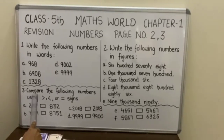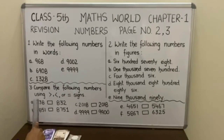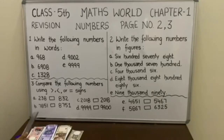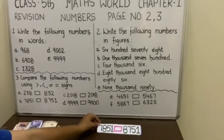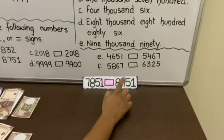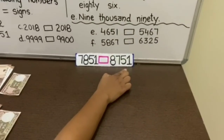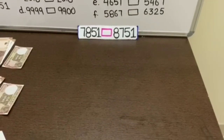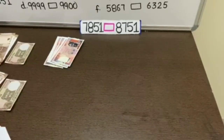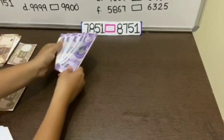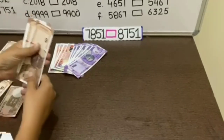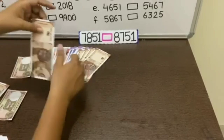The third question: compare the following numbers using less than, greater than, or equals to sign. We will solve part B. The statement is 7,851 blank 8,751. We will take currency notes according to the statement — 7,851.